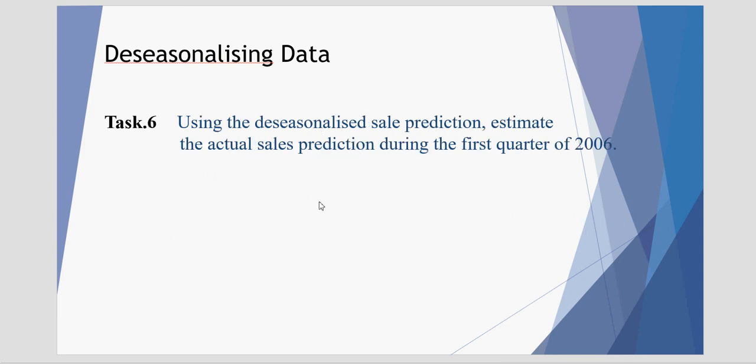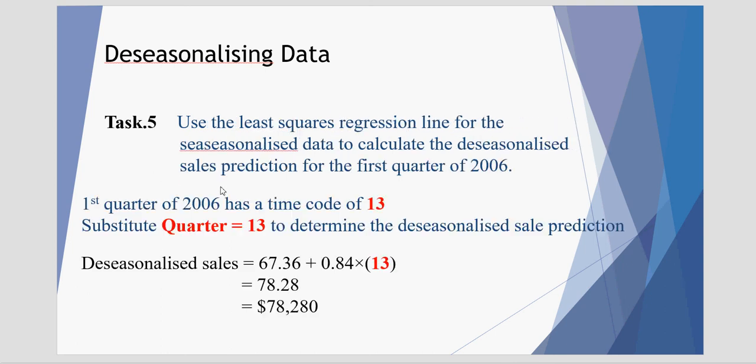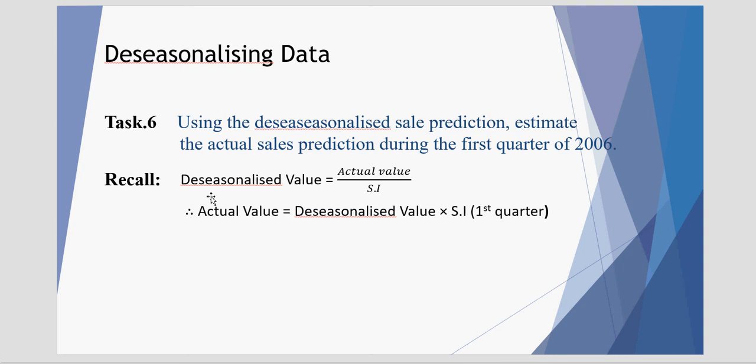There was one last task. Using the deseasonalized sale prediction, estimate the actual sales prediction during the first quarter of 2006. That equation we just used is looking at deseasonalized. It's taking away the seasonality from our prediction. If we want to go back now and estimate the actual predicted value, we need to do the reverse.